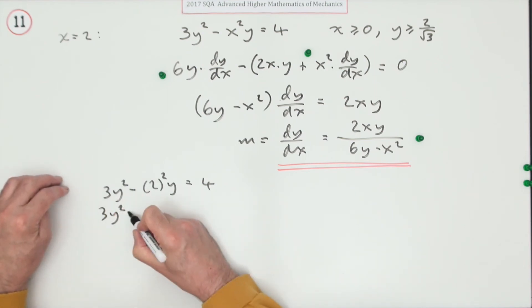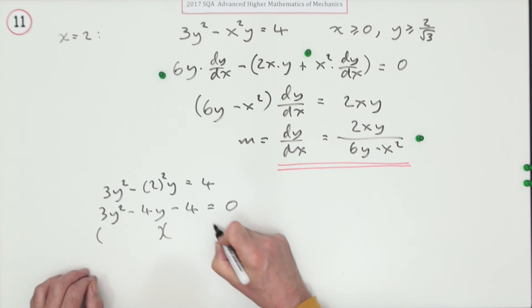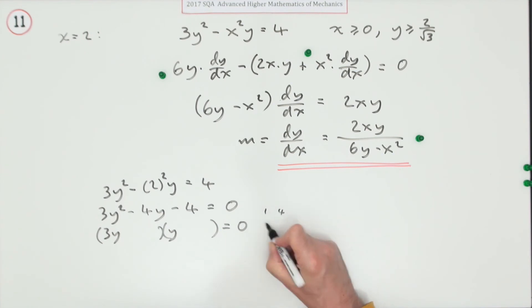Factorizing 3y^2 - 4y - 4 = 0: it must be 3y times y. Could be 1×4 or 2×2. For a difference of 4 when one is multiplied by 3, it's 2 and 2. The middle term is negative, so the larger one is negative.